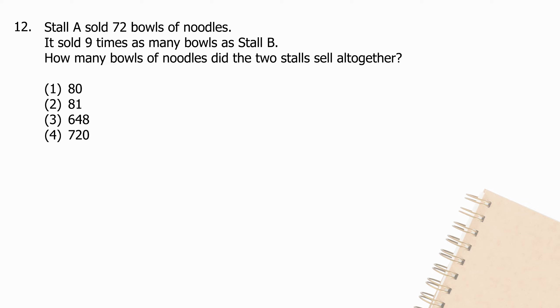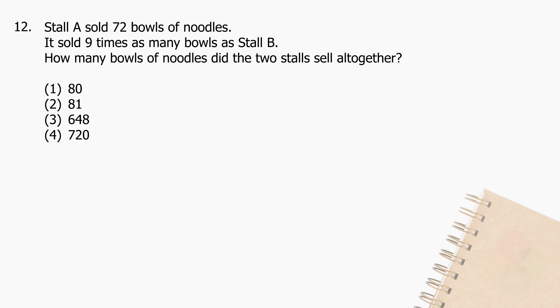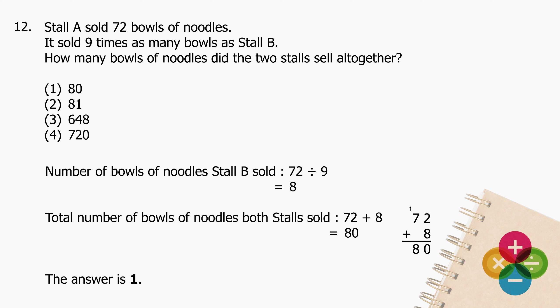Question 12: Stall A sold 72 bowls of noodles. It sold 9 times as many bowls as Stall B. How many bowls of noodles did the two stalls sell altogether? Divide 72 by 9 — quotient is 8. Total bowls: add 72 to 8 and the sum is 80. The answer is 1.